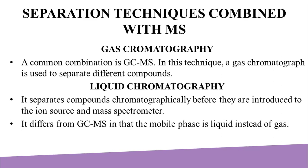Moving on to separation techniques combined with mass spectrometry: an important enhancement to mass spectrometry is its use in tandem with chromatography and other separation techniques. The first is gas chromatography mass spectrometry (GC-MS), in which a gas chromatograph separates different compounds; the stream of separated compounds is fed online into the ion source—a metallic filament with applied voltage that emits electrons to ionize the compounds. Ions can further fragment, yielding predictable patterns, and intact ions and fragments pass into the mass analyzer and are eventually detected.